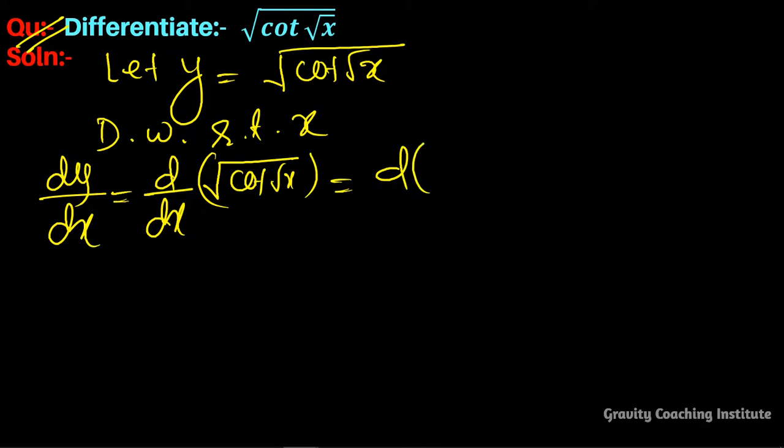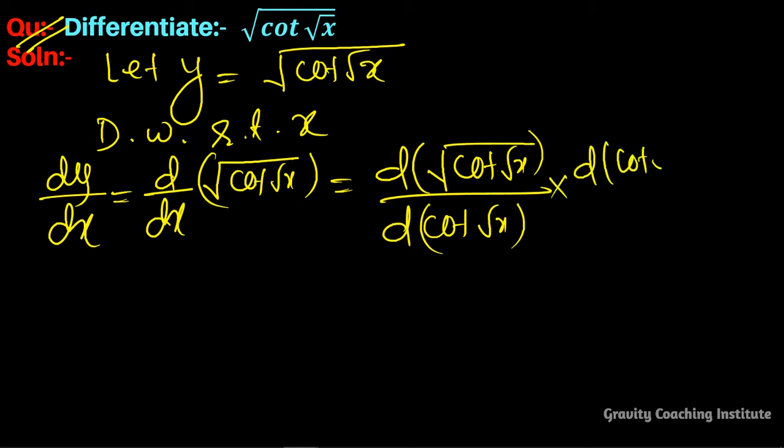This cannot be differentiated directly, so we'll use the general method. First we'll differentiate the outer root, then cot root x, and then root x.